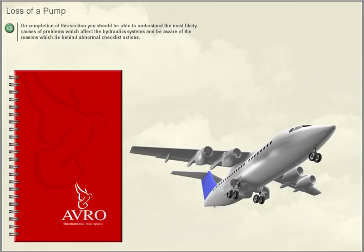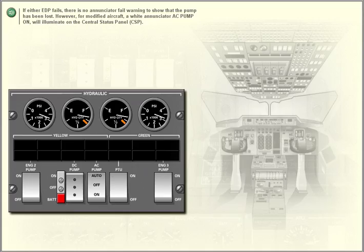Loss of a pump. On completion of this section, you should be able to understand the most likely causes of problems which affect the hydraulic systems, and be aware of the reasons which lie behind abnormal checklist actions. If either EDP fails, there is no annunciator fail warning to show that the pump has been lost.